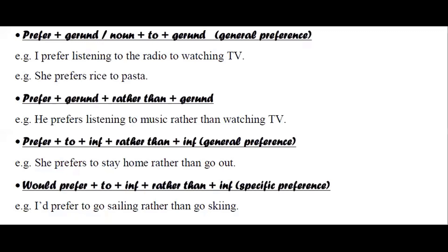We can use 'prefer' plus gerund plus 'to' plus another gerund to express general preference. For example: 'I prefer listening to the radio to watching TV' or 'She prefers rice to pasta.' Another example using 'rather than' instead of 'to': 'He prefers listening to music rather than watching TV.'